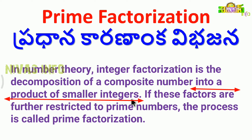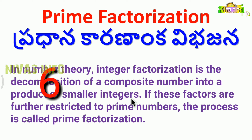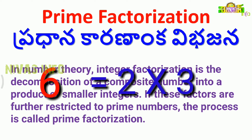When we do decomposition, we express a number as a product of smaller numbers. For example, take 6. If we do decomposition, we get 2 times 3. We do a multiplication of numbers. Those individual numbers are the factors. This process is called factorization.